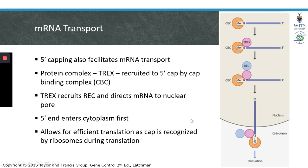The 5' cap is the ribosomal binding site and is first recognized during the process of translation. Therefore, the 5' cap entering the cytoplasm first leads to highly efficient translation, as this mRNA may already be translated the minute the 5' cap starts entering the cytoplasm.